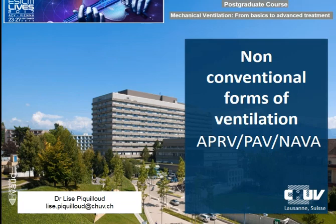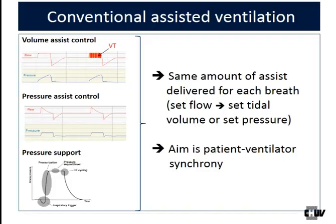We are going to speak about something a little bit more unusual in our clinical practice, but with a potential major interest. Coming back to things presented yesterday, conventional assisted ventilation is mainly volume assist control, pressure assist control, and pressure support. For all those modes, we have a given amount of assist that we can choose as a clinician, and this amount of assist delivered is independent from the patient's demand. The aim is to have patient-ventilator synchrony.